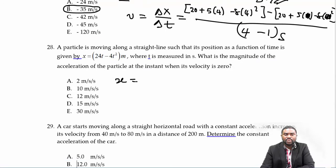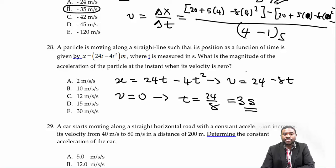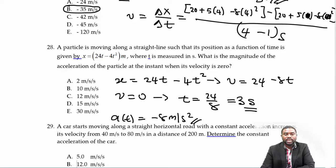Next: x = 24t − 4t². Then v = 24 − 8t. When the object comes to rest, v = 0, so t = 24/8 = 3 seconds. We've been asked to determine the magnitude of the acceleration at the instant when velocity is 0. At that time, a(t) = −8 m/s². There's a typo in the problem — it should be 3 — then your answer will be among the choices.